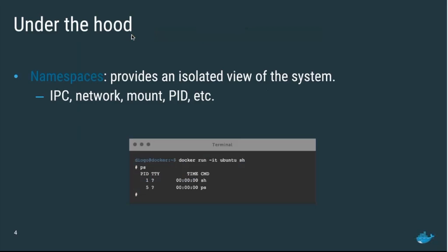Namespaces provide you an isolated view of the system. When you run anything inside a Docker container, you essentially have IPC, network, mount, PID namespace, etc. For example, if I run an Ubuntu container and create a shell, doing PS will show only the processes inside that container — the shell itself and the PS command. This is because the PID namespace separates all container processes from host processes.